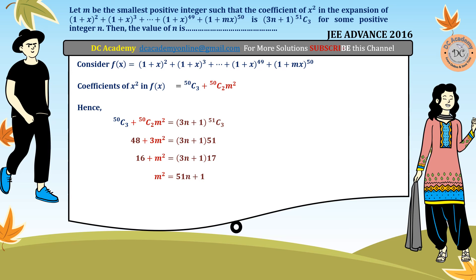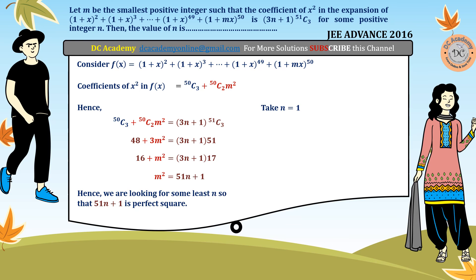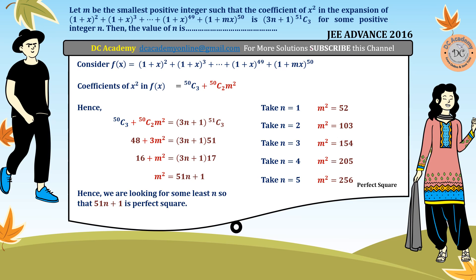Using trial and error: n=1 gives m²=52, n=2 gives 103, n=3 gives 154 — none are perfect squares. At n=5, we get 51·5+1 = 256 = 16², which is a perfect square. Therefore the smallest value of n is 5, giving m=16. The answer is n=5.